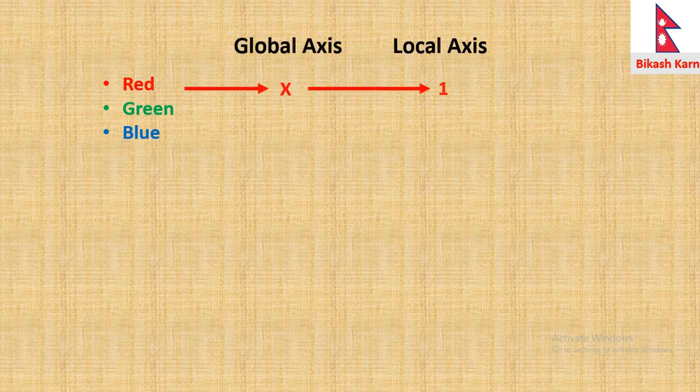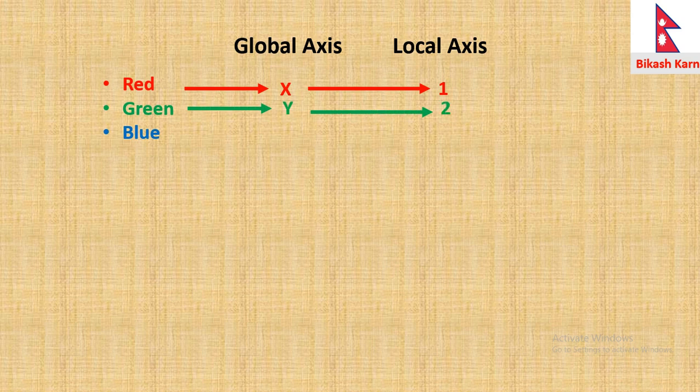Red represents global x and local 1. Green is for global y and local 2. The last one, blue, is for global z and local 3 axis.